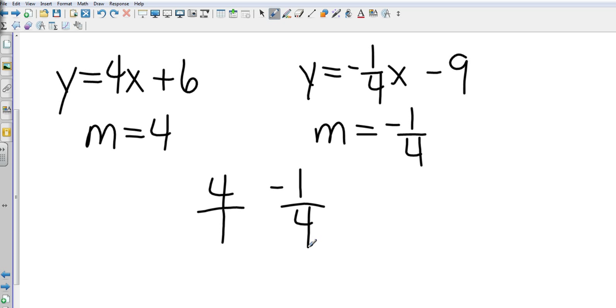So let's compare those slopes. That's 4 over 1. That's negative 1 fourth. Are those negative reciprocals of each other? And that answer would be yes. Another way of telling is if I take the two slopes and I multiply them together, my answer should always be negative 1.